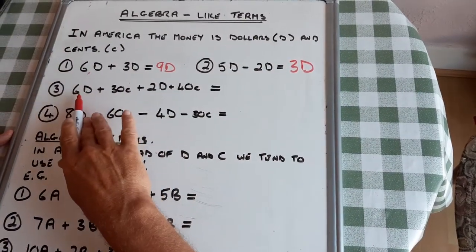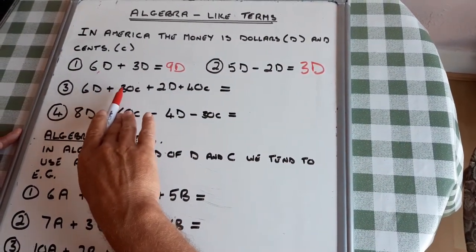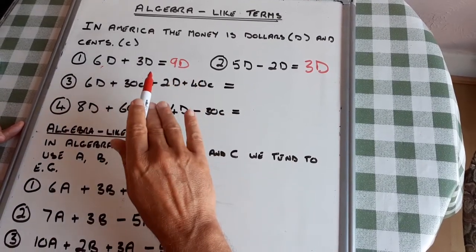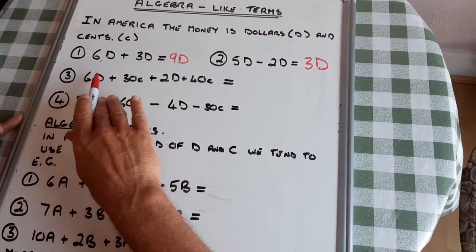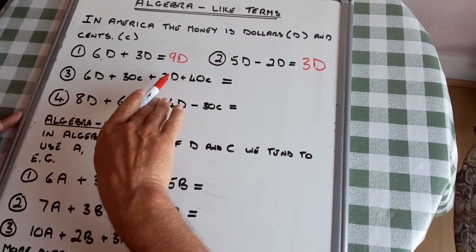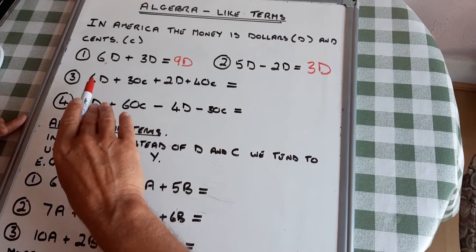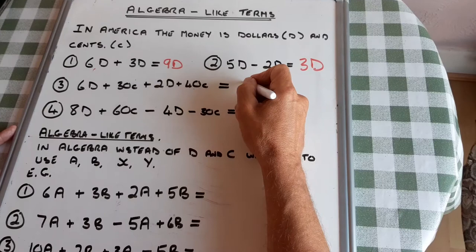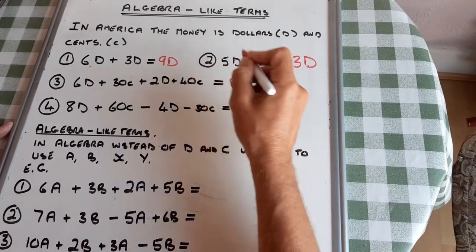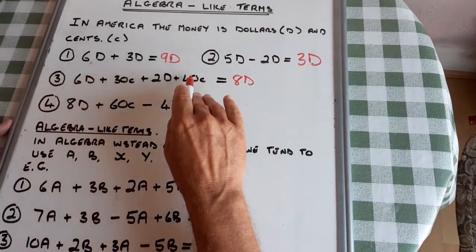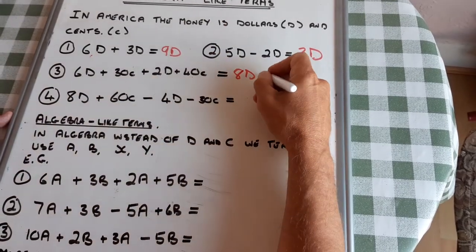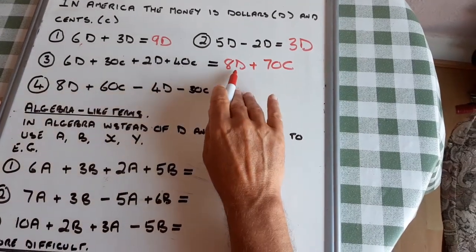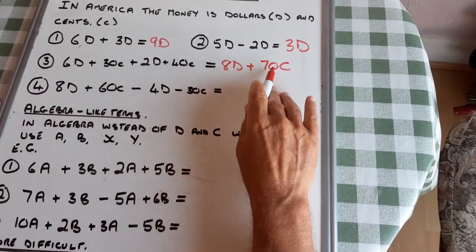I have six dollars thirty cents and two dollars forty cents. So I need to keep my dollars and cents separate, because they're separate coins. Six dollars add two dollars is eight dollars. Thirty cents add forty cents is seventy cents. Eight D plus seventy C.